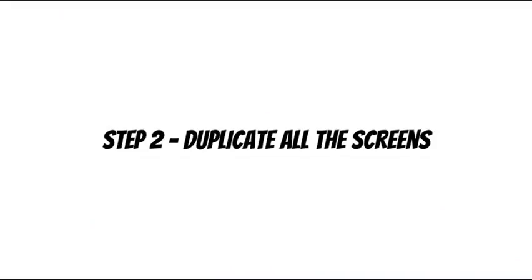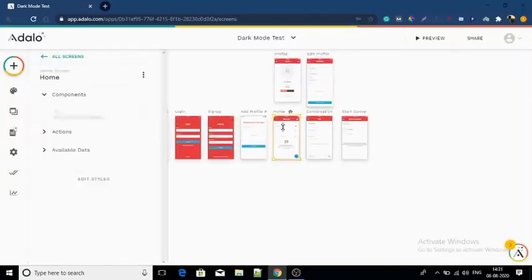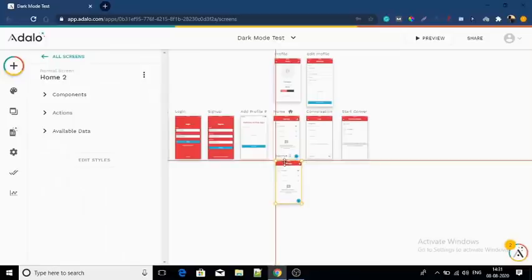Step number two: duplicate all the screens except the welcome screens — that is the welcome screen, login screen, sign up screen, and maybe a sign up two screen. To duplicate the screen, select the screen and drag it while also holding the Alt key.